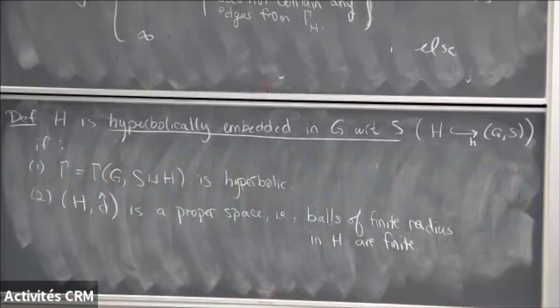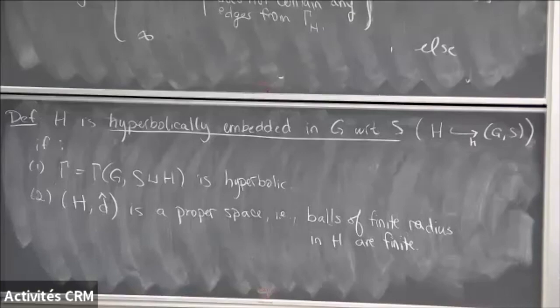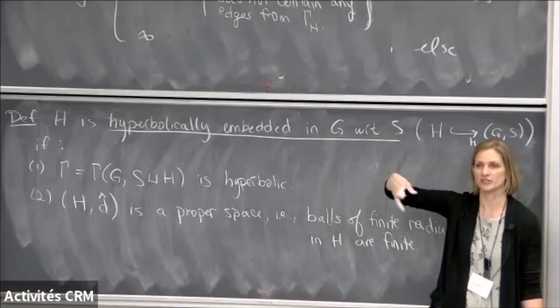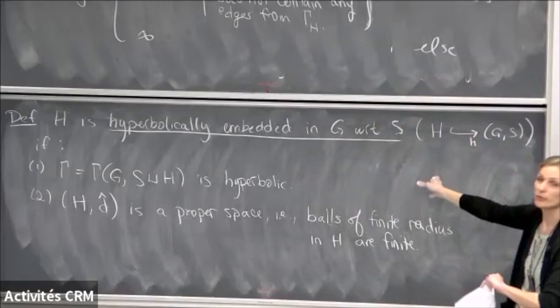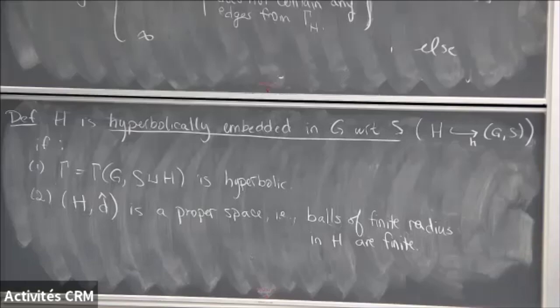This is a priori quite strange — why this d-hat metric? Let me draw pictures and give examples. Also, you could do all of this with a collection of subgroups H_1, H_2, H_3, finitely or infinitely many, defining d-hat metrics for each subgroup in the collection. Everything I say holds for at least a finite collection, but I'll focus on a single hyperbolically embedded subgroup to avoid adding subscripts everywhere.